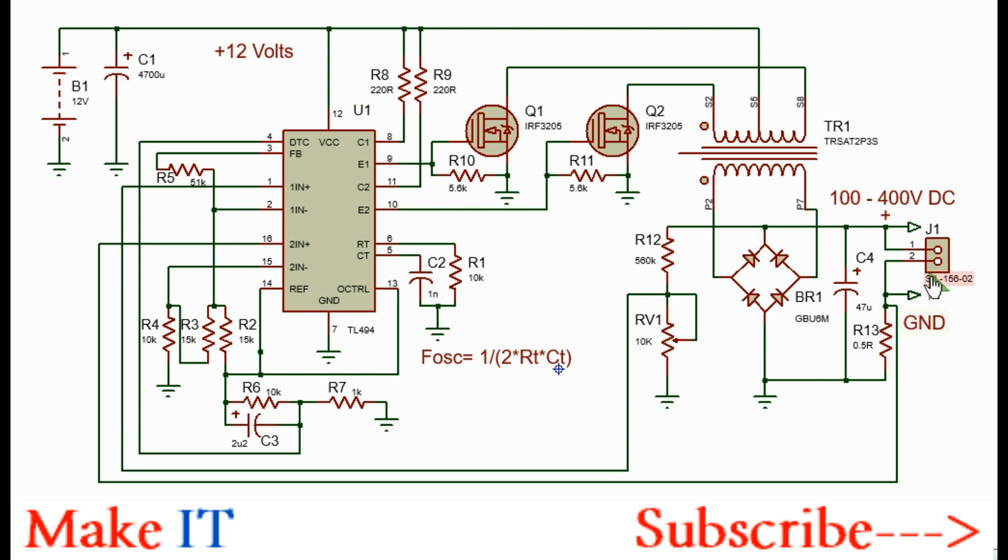This is the output connector as well as the output filtering capacitor. Ensure it's rated at least 450 volts and it's a low ESR type. You can even use a 100 microfarads for a smoother operation. This resistor here, ensure it's rated at least 3 watts and preferably use one rated for 5 watts.